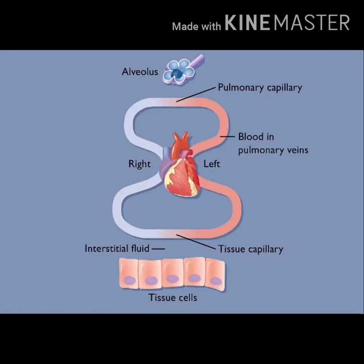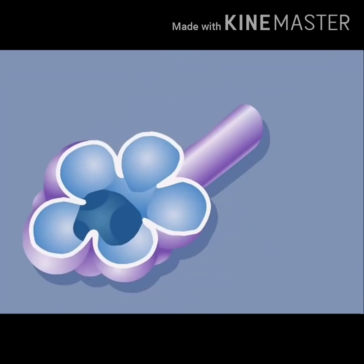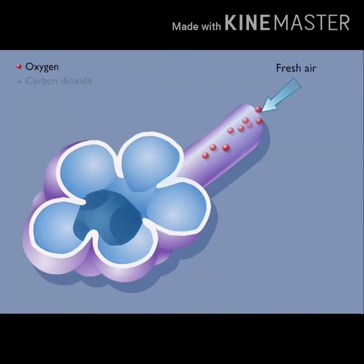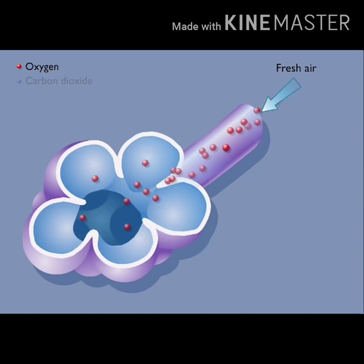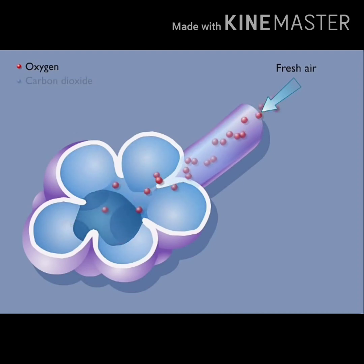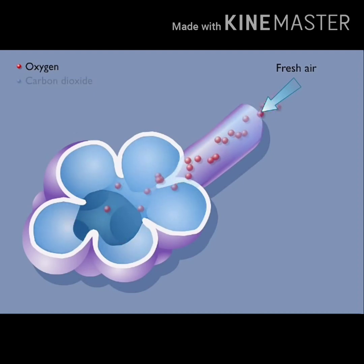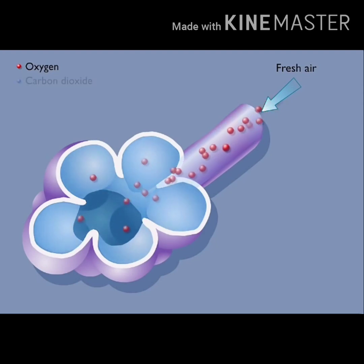Fresh air entering the lungs carries oxygen to the alveoli. The amount of gas in air, or gas dissolved in a fluid, can be expressed as partial pressure, which is measured in millimeters of mercury. The partial pressure of oxygen in the air within the alveoli is 104 millimeters of mercury.